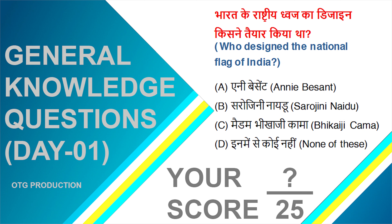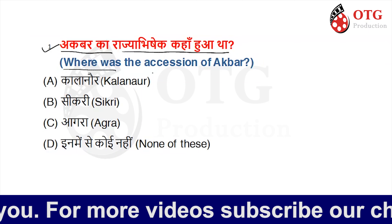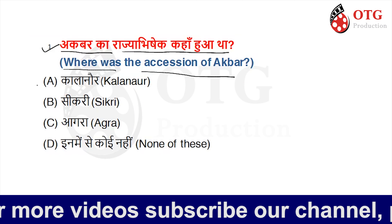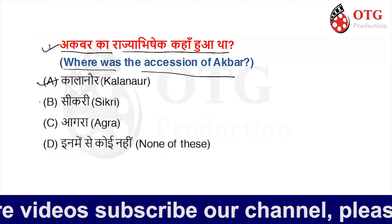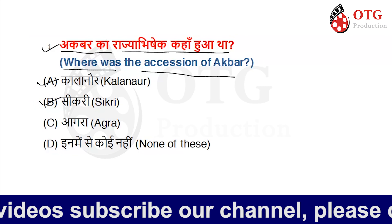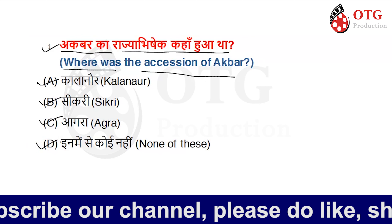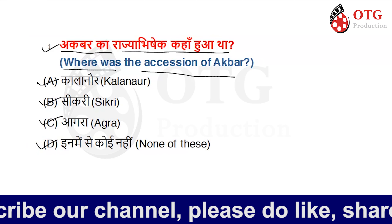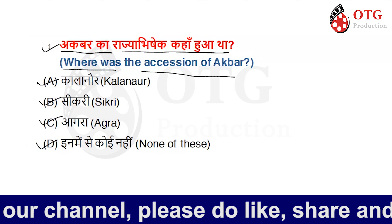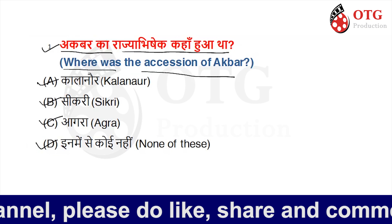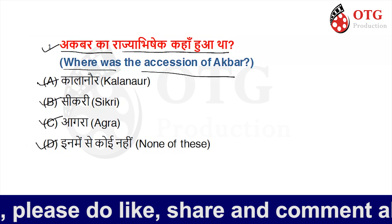Our first question is: where was the birth place of Akbar? Option A is Kalanod, Option B is Sikri, Option C is Agra, and Option D is none of these. You have only 5 seconds to answer.